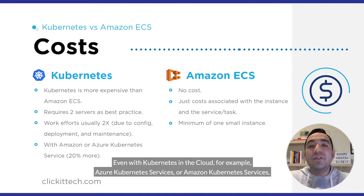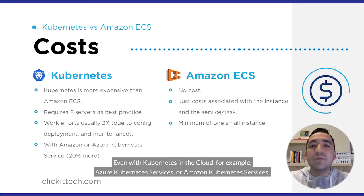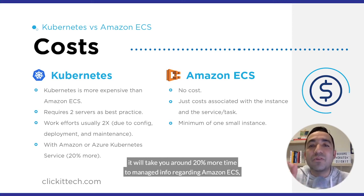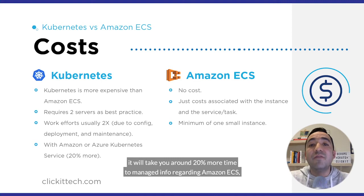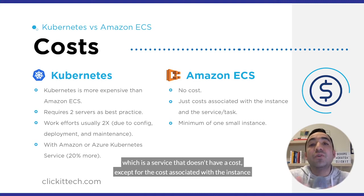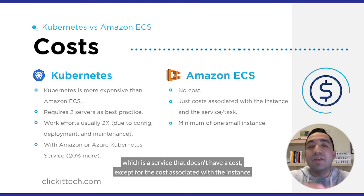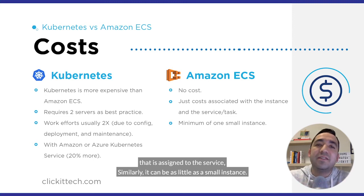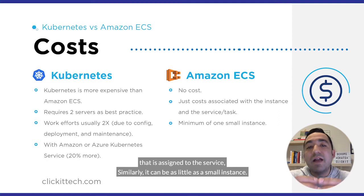Even with Kubernetes in the cloud — for example, Azure Kubernetes Service or Amazon Kubernetes Service — it will take you around 20% more time to manage it in full. Regarding Amazon ECS, which is a service that doesn't have a cost except for the cost associated with the instance assigned to the service, it can be as little as a small instance.